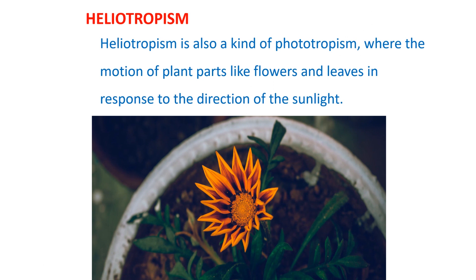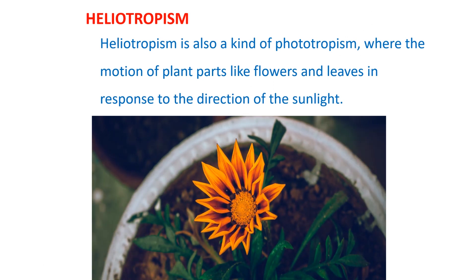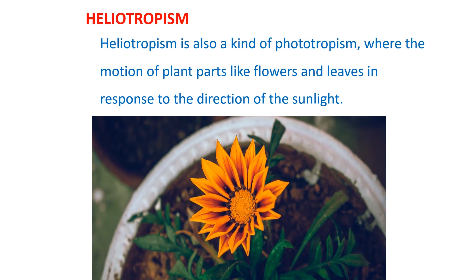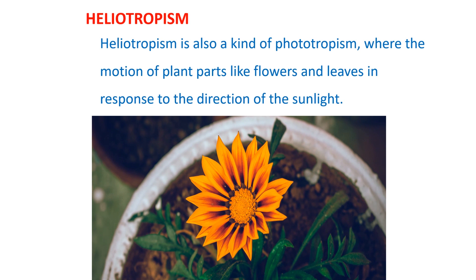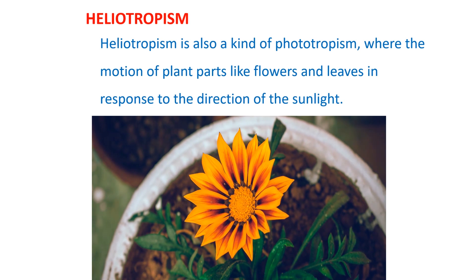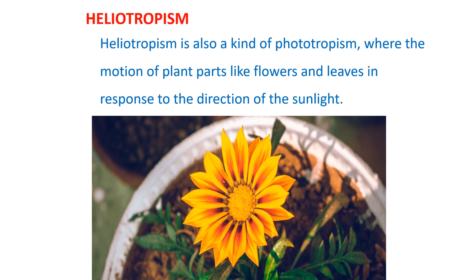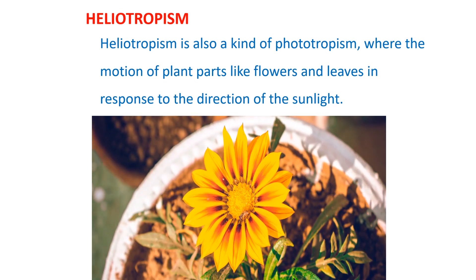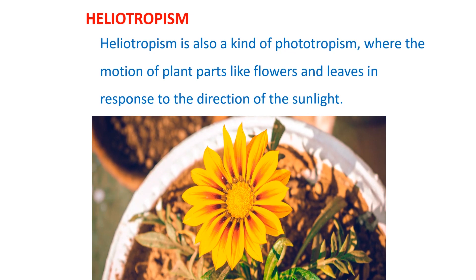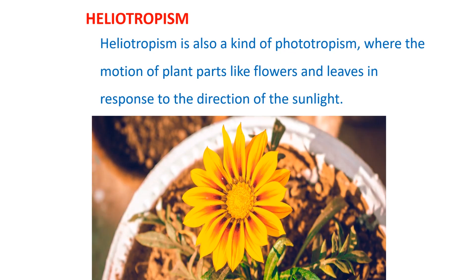Heliotropism is also a kind of phototropism, where the motion of plant parts like flowers and leaves occurs in response to the direction of sunlight.